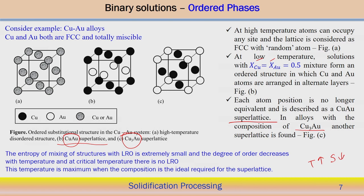At low temperature, a more ordered structure exists; at high temperature, we can expect a disordered structure. There must be some critical temperature below which only the long range ordered structure we can get. This temperature is maximum when the composition is the ideal required for the super lattice. When attempting to create a super lattice, the ideal composition requirement is reached at maximum temperature, creating a super lattice structure — which can be CuAu or Cu3Au, both are possible.